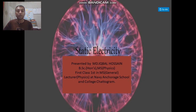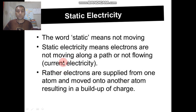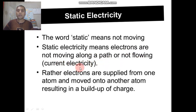Static electricity. At first we have to know what is static electricity. The word 'static' means not moving. Static electricity means electrons are not moving along a path, or not flowing as current. Rather, electrons are supplied from one atom and moved onto another atom.